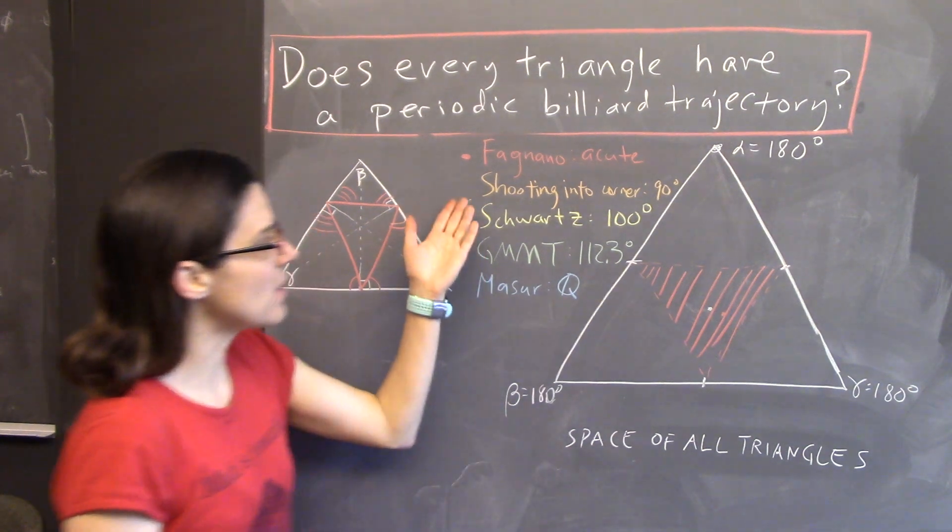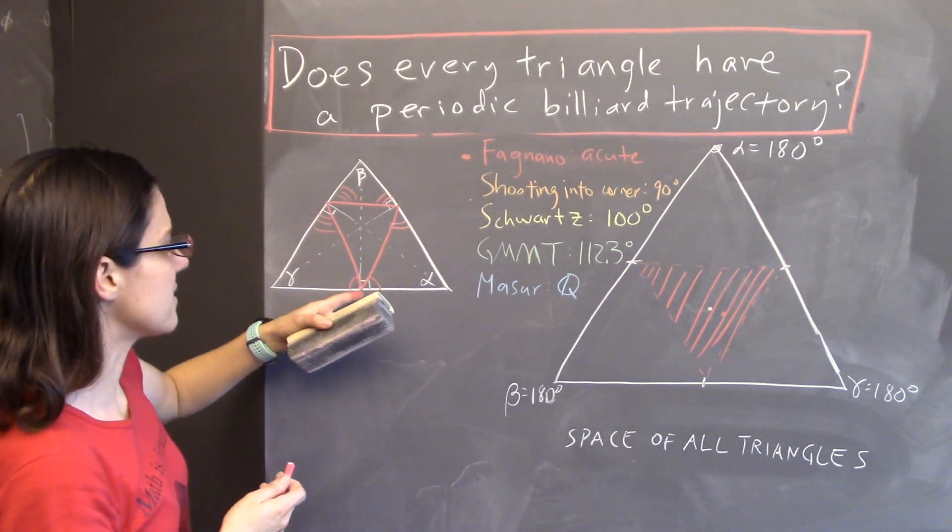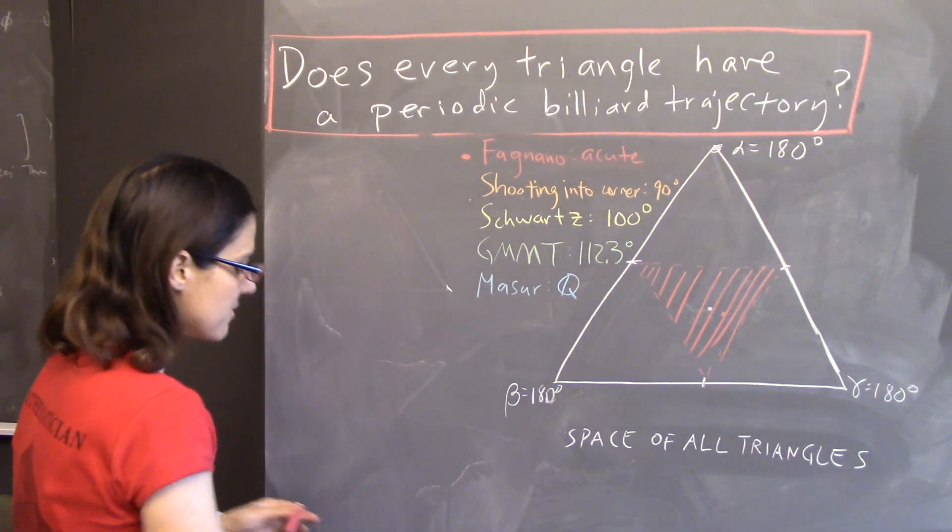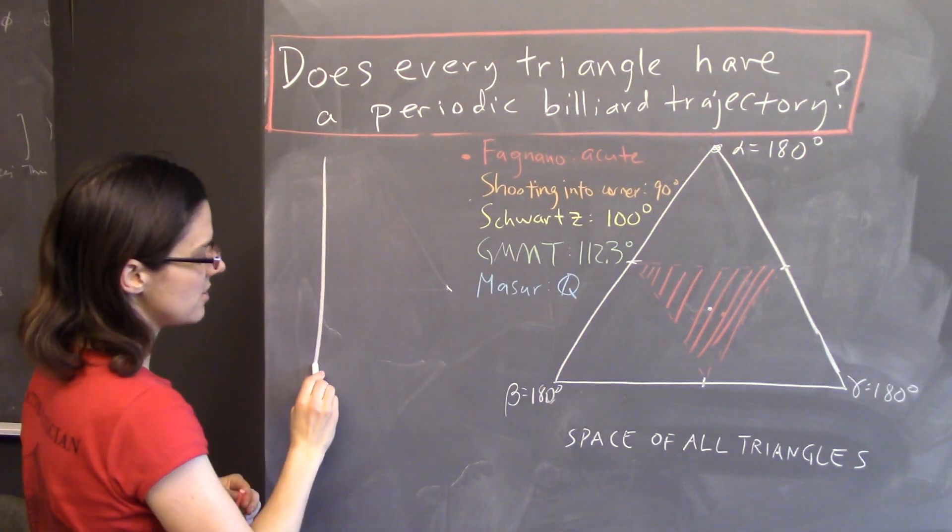Now, if you have a right triangle, this construction doesn't work because the altitudes coincide with the edges. But, it turns out there's another really cool construction that you can use.